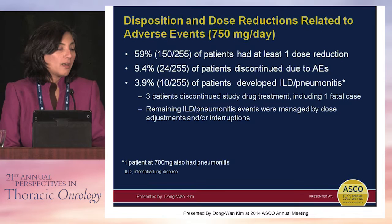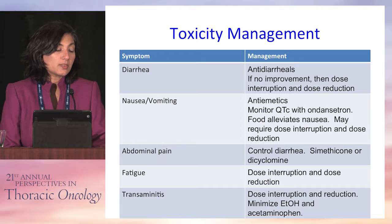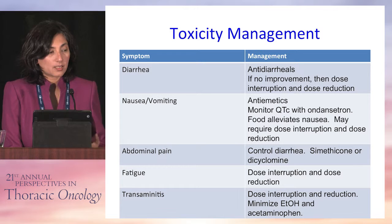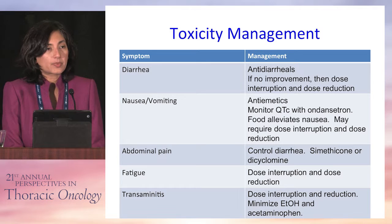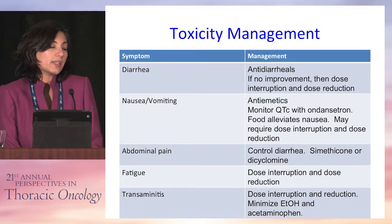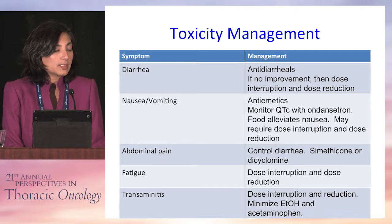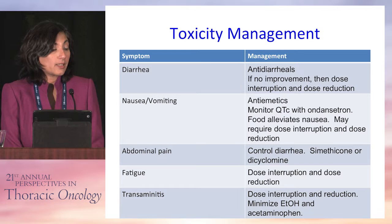Ceritinib is known for some toxicities that emerged out of this trial, and about 60% of patients had at least one dose reduction. The more common toxicities include GI toxicities like nausea, vomiting, and diarrhea. In contrast to crizotinib, the experience with ceritinib is that you do need to have a discussion about the potential for these toxicities and make sure patients have antiemetics and antidiarrheal agents at home. The hope is that food effect data may help improve the toxicity profile, as it did with crizotinib.